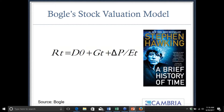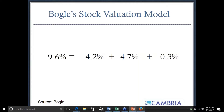Bogle's simple formula: future 10-year returns can be decomposed into three components — one, starting dividend yield; two, earnings or dividend growth; and three, change in valuation. Historically in the US, that 9.6% return comes from a starting dividend yield of 4.2%, earnings growth of 4.7%, and a tiny valuation bump from starting the 20th century at a lower valuation and ending at a higher one — actually the highest ever seen in December 1999.